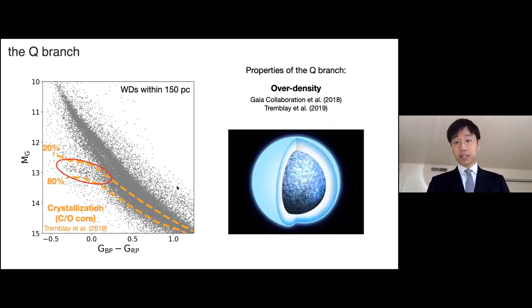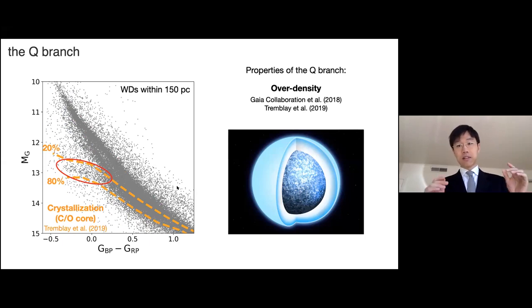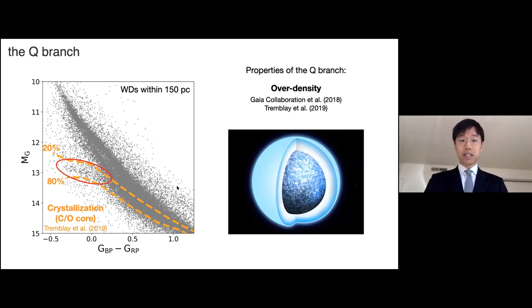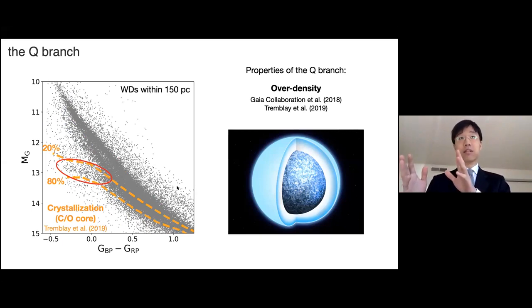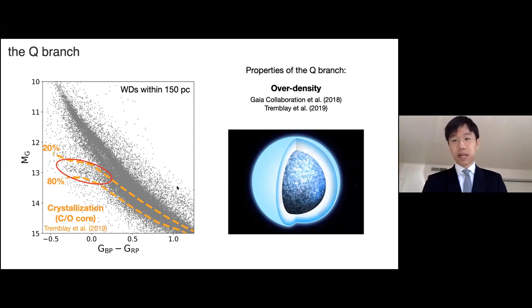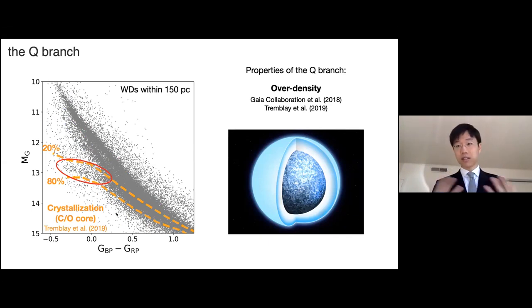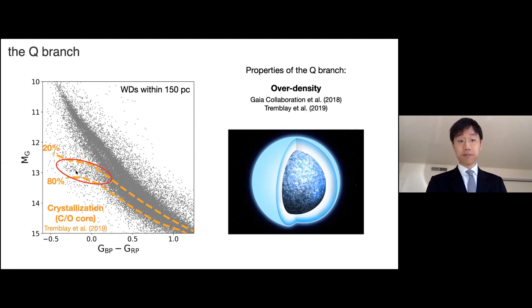People noticed that the position of this branch happens to coincide with where crystallization should happen. Crystallization is the liquid-to-solid phase transition of the white dwarf material, which will release some latent heat — just like the freezing from water to ice. This crystallization is something people have expected for more than half a century. That's why in 2019, Frank Beck et al. wrote a Nature paper proposing that crystallization is the physics behind this branch.